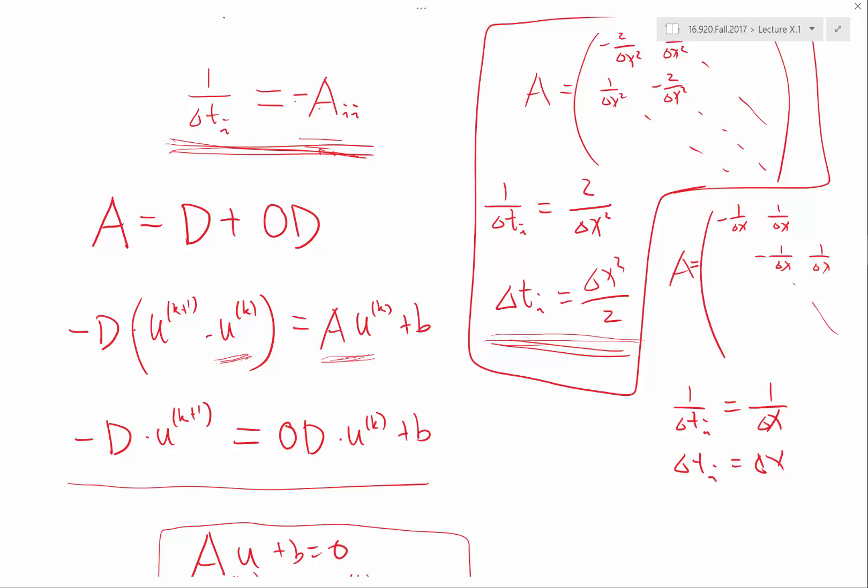And another thing is, if for some PDEs, if just doing Jacobi iteration doesn't converge, right, it's also useful to think of it in this way. Just to think of what is kind of the equivalent time step you are taking by looking at the diagonal element.